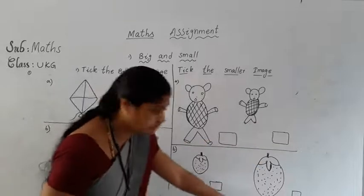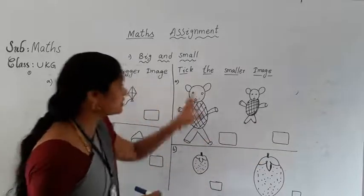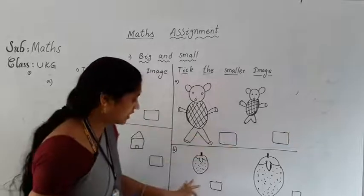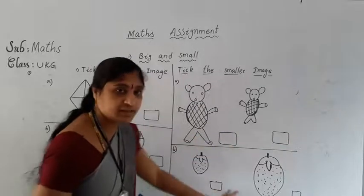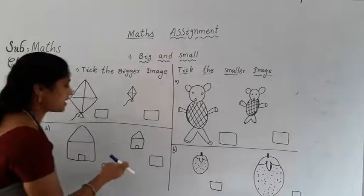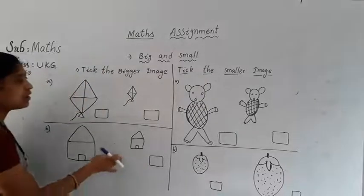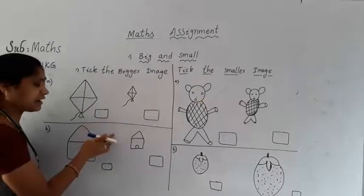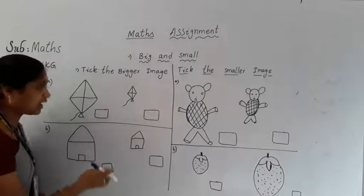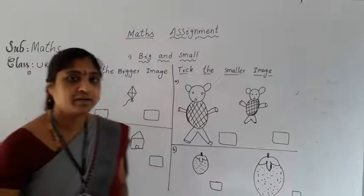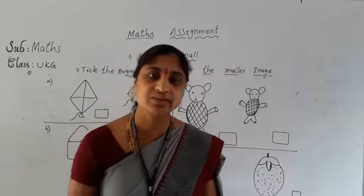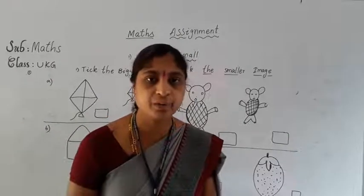Here, these are fruits. Now what is the question? Tick the smaller image. You see here, which one is the smaller? You select and tick it. This is your math homework. You draw the pictures neatly and send it to your class teacher. Till then afterwards we meet the next class with another topic. Good bye.